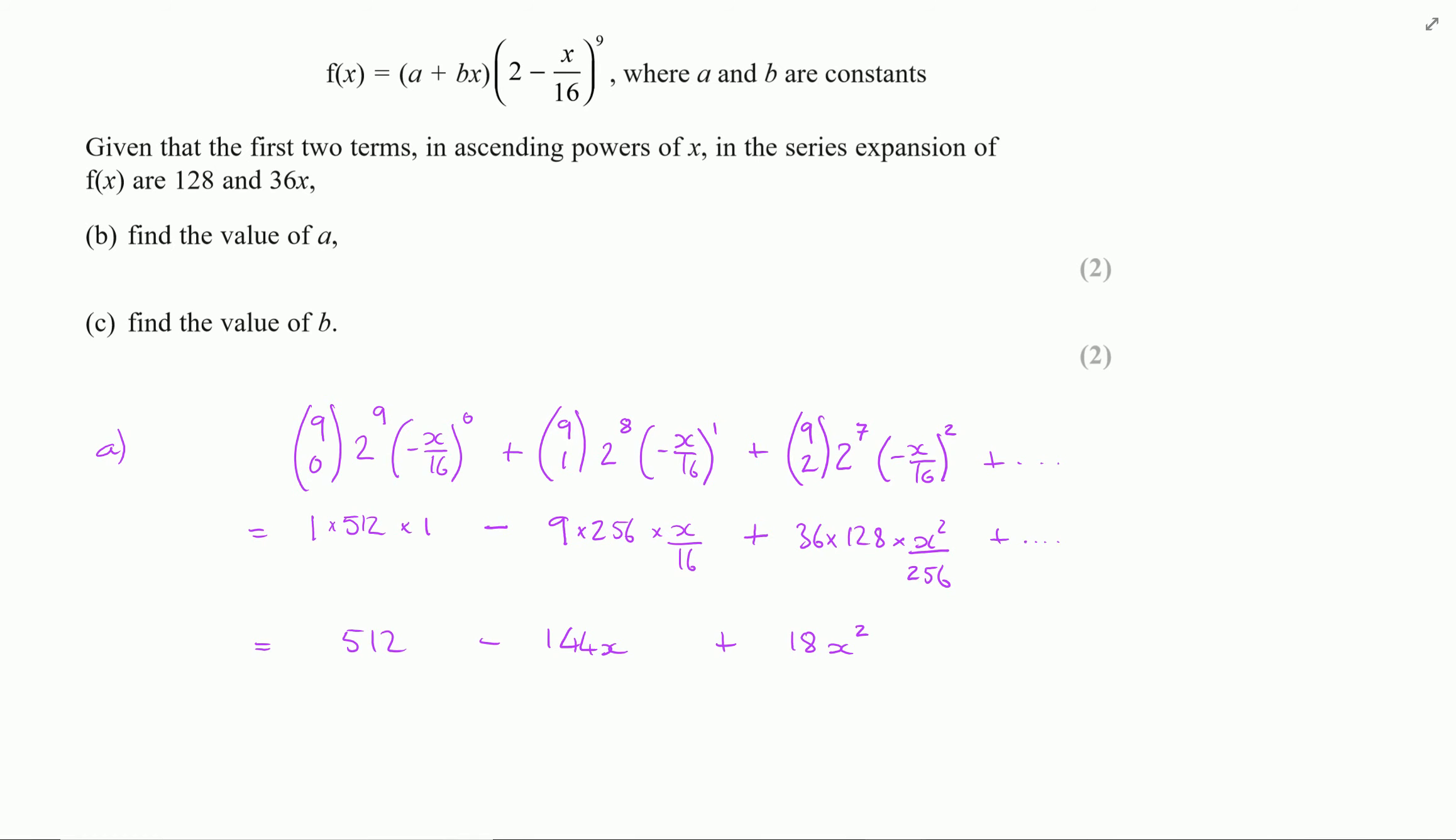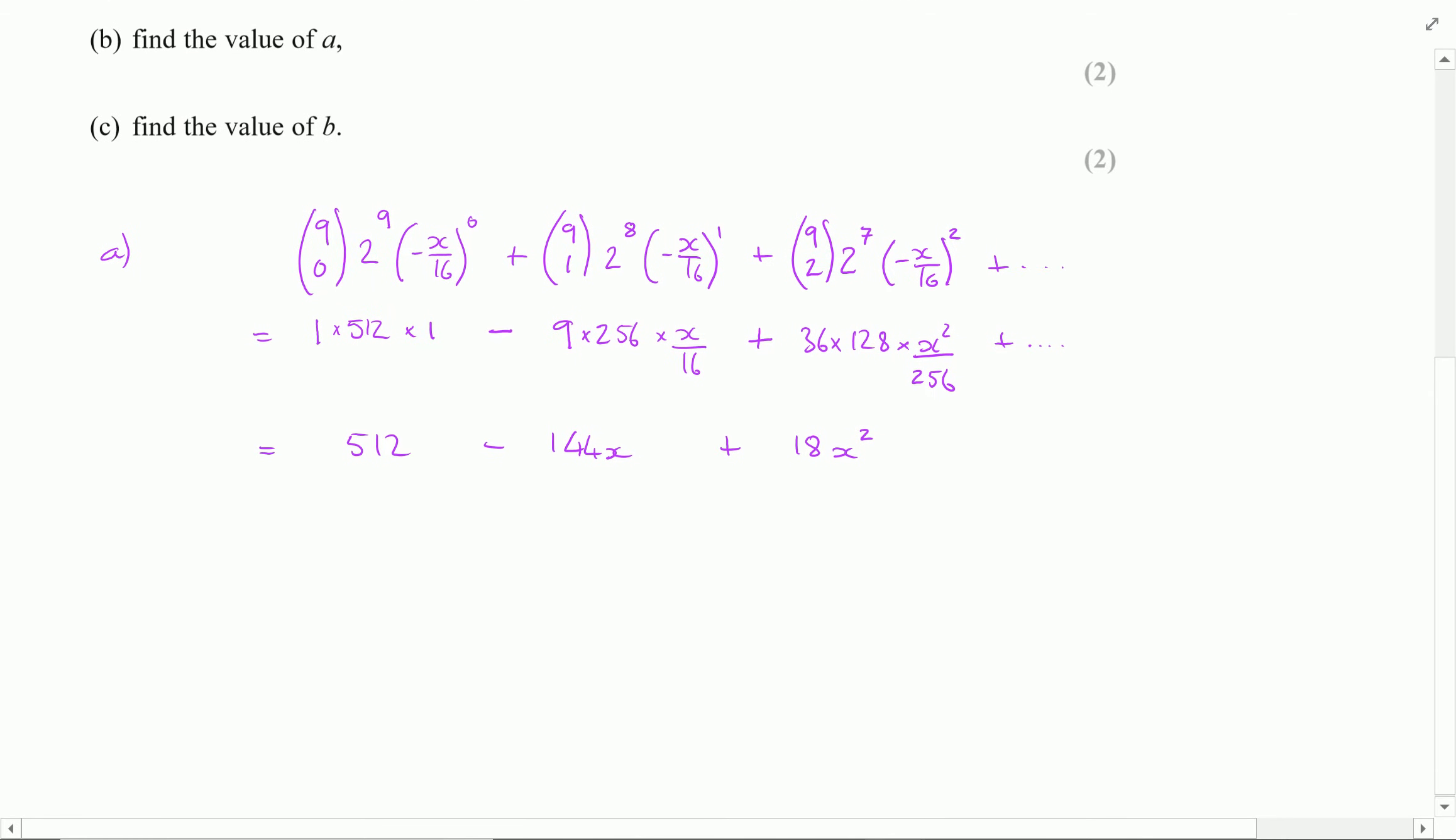Then we're given some extra information. We're told that f of x is equal to a plus bx times this binomial expansion. And we're also given the first two terms of this expansion in ascending powers of x are 128 and 36x. We want to find the values of a and b. This is a continuation so for part b I'm going to be using my answer for part a.